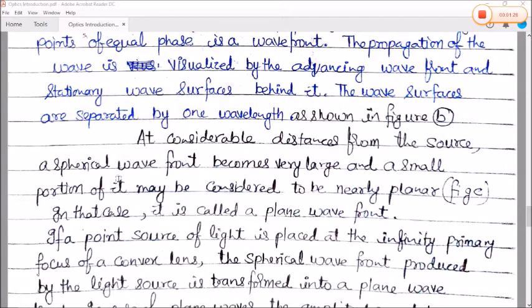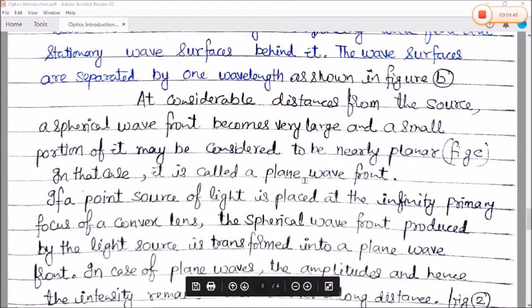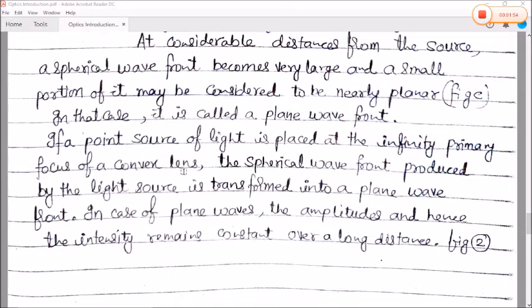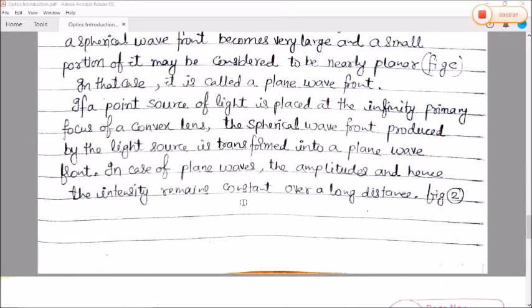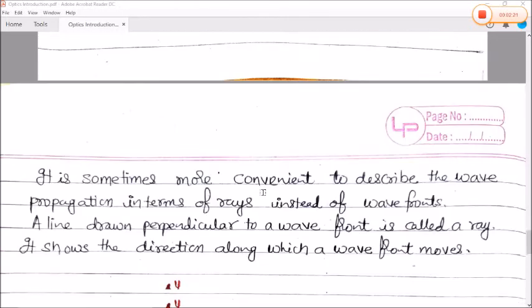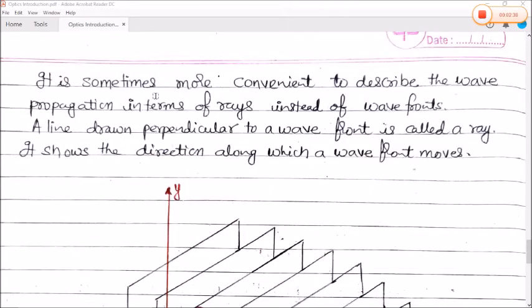In figure B, the distance between the two consecutive wave surfaces is lambda, this is the wavelength. At considerable distance from the source, a spherical wavefront becomes very large, and a small portion of it may be considered to be nearly planar, which is shown in figure C. In that case it is called a plane wavefront. If a point source of light is placed at the primary focus of a convex lens, the spherical wavefront produced by the light source is transformed into the plane wavefront. In case of plane waves, the amplitude and hence the intensity remains constant over a long distance.